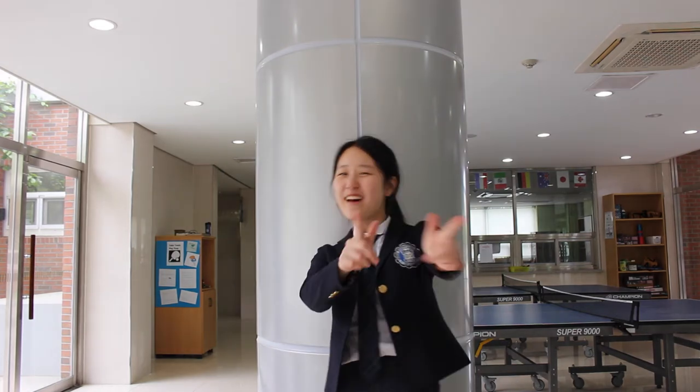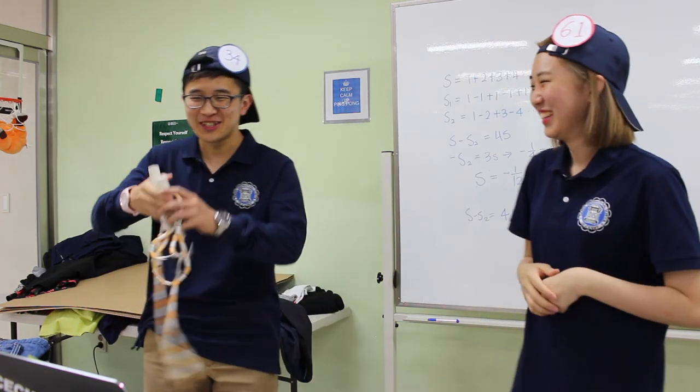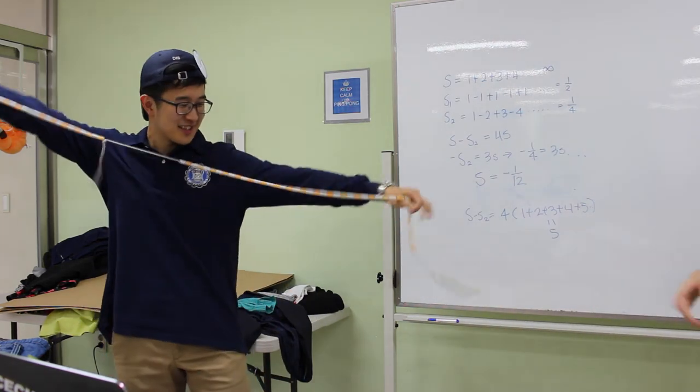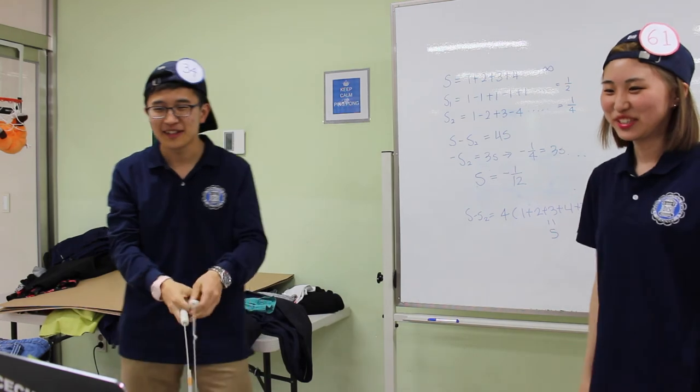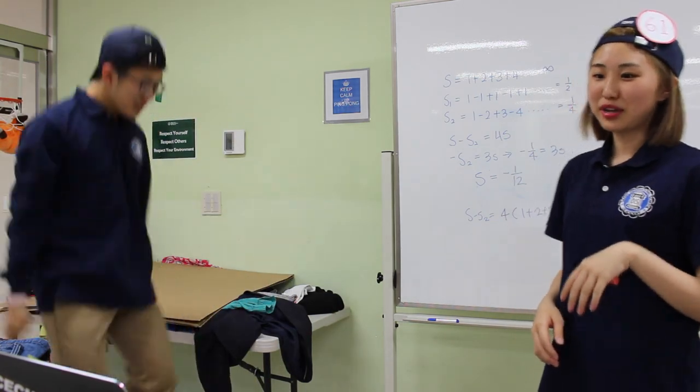First, guys, the answer is negative 1 over 12. What? String. Oh, you mean string theory. Yeah. When doing math in quantum level, we often have to... We'll see you next time. Bye-bye.